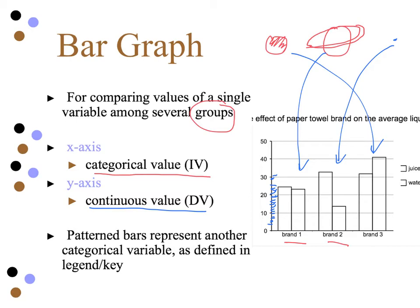We'll use patterned bars to represent extra variables. So in this case we have the effect of paper towel brand on the average liquid absorbed. What we would do is color one set of bars for one liquid — say juice — and leave the other without color for water. The most frustrating thing for me as a science teacher is when students — or even adults who should know better — just throw random colors into different bars to make it look pretty. The color should really be used to indicate different variables so you can distinguish between them.